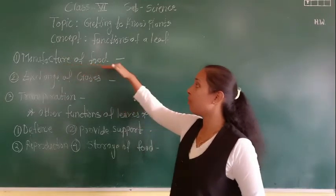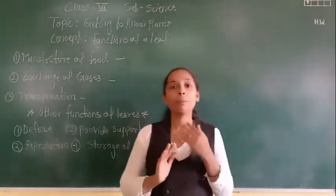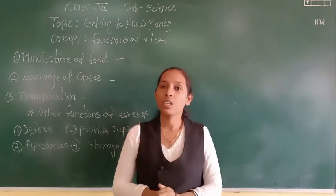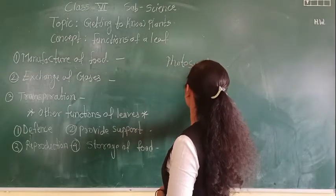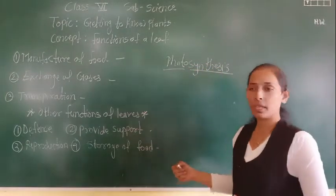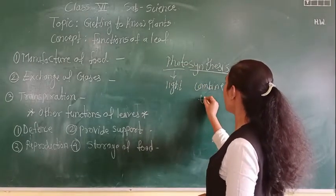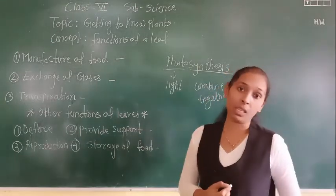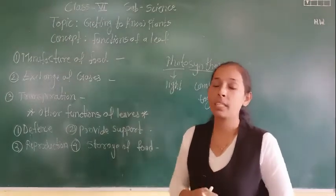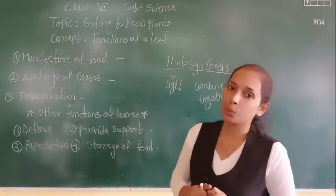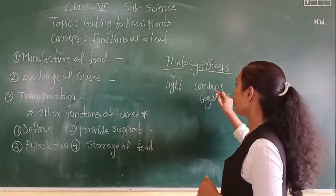The first function we will discuss is the manufacture of food. The very important and useful function of the plant is manufacturing food. Green plants use their green leaves to make their own food through a process called photosynthesis. The word photosynthesis combines two parts — 'photo' meaning light, and 'synthesis' meaning to combine or make something. Using light, water, and carbon dioxide in the presence of sunlight, plants make their own food.